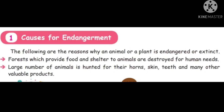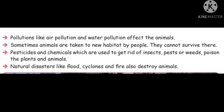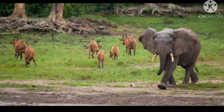Causes for endangerment: the following are the reasons why an animal or a plant becomes endangered or extinct. Forests which provide food and shelter to animals are destroyed for human needs. Large numbers of animals are hunted for their horns, skin, teeth, and other valuable products. Pollution such as air and water pollution affects animals. Sometimes animals are taken to new habitats where they cannot survive. Pesticides and chemicals used to get rid of insects, pests, or weeds poison plants and animals. Natural disasters like floods, cyclones, and fire also destroy animals.